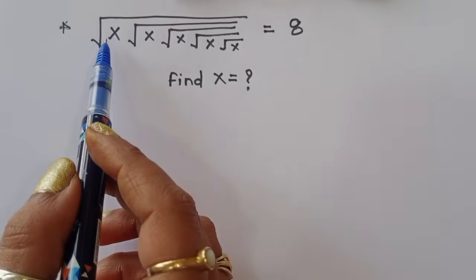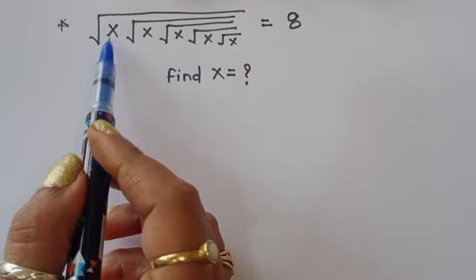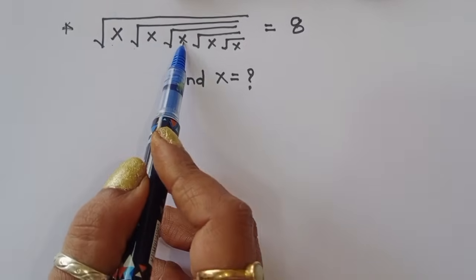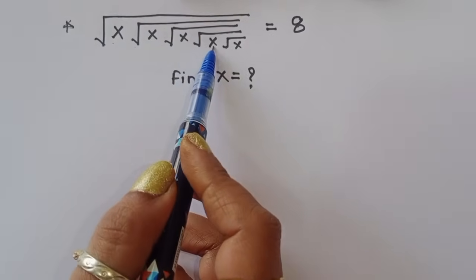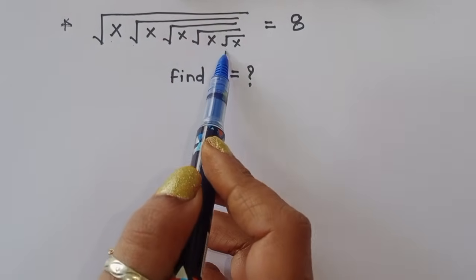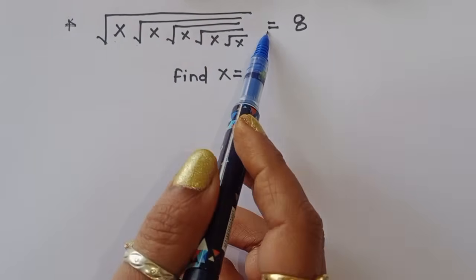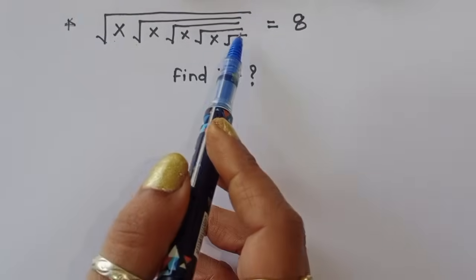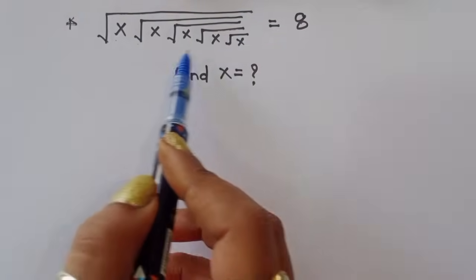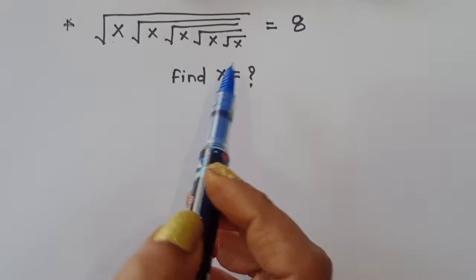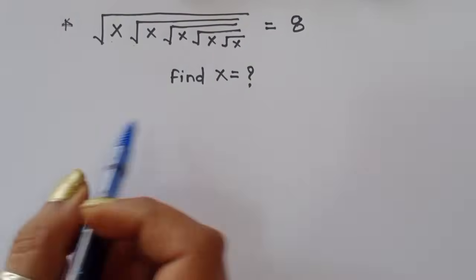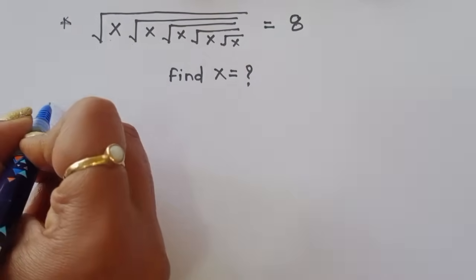The question is: given square root of x under square root of x under square root of x under square root of x under square root of x is equal to 8. We have to find out the value of x. Let's see the solution.